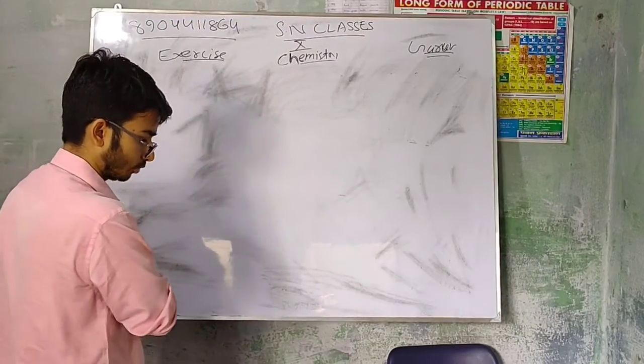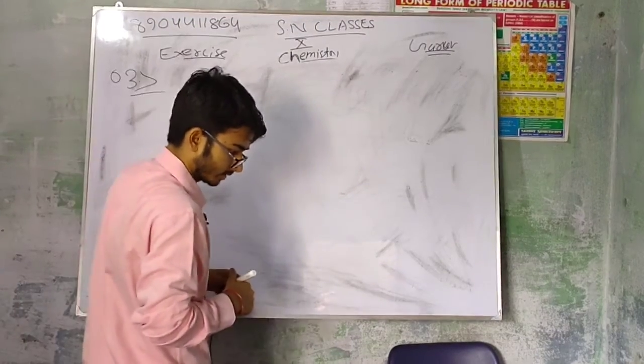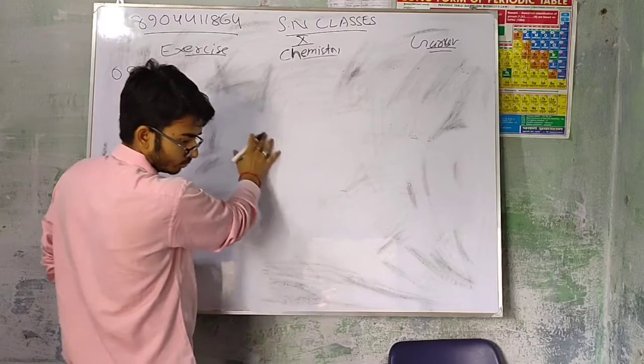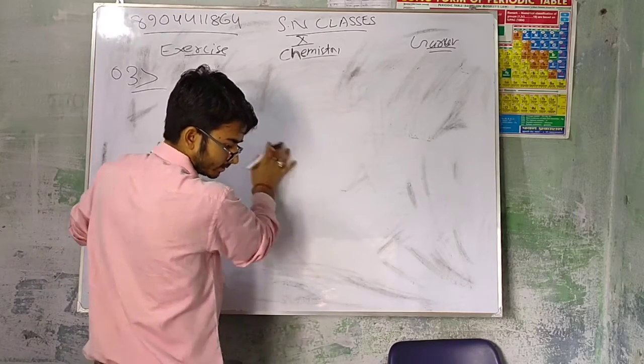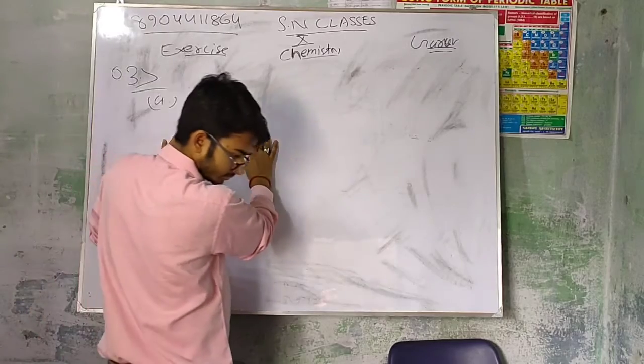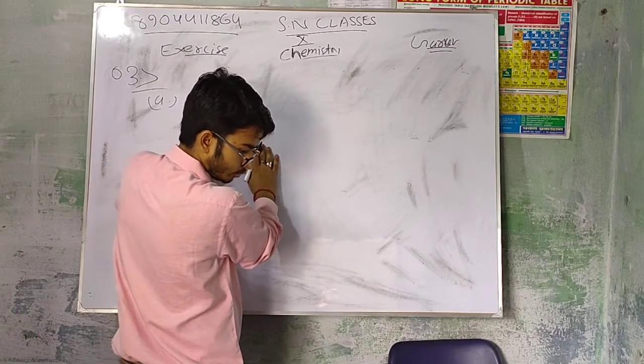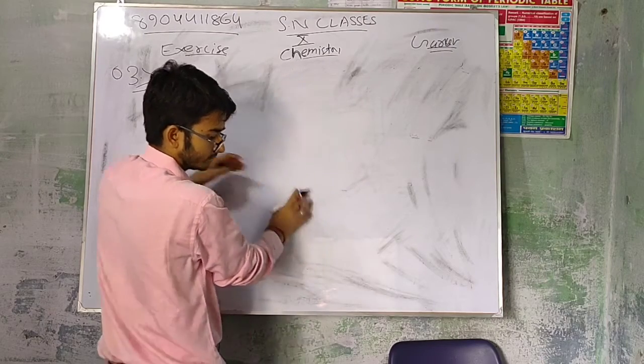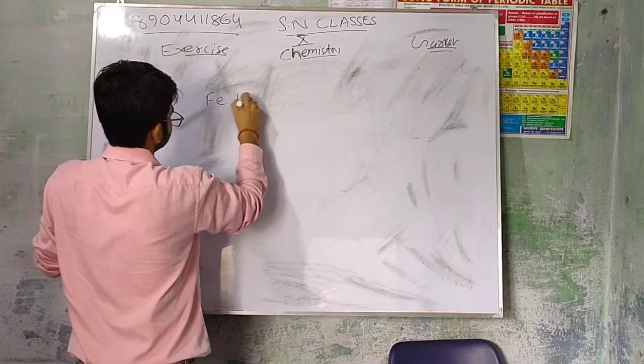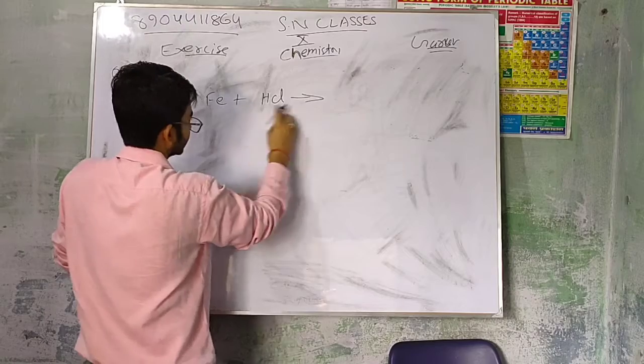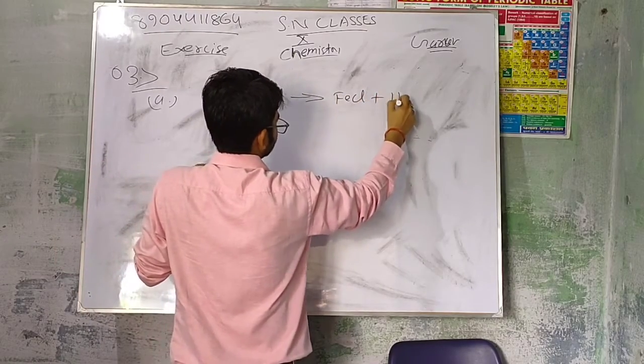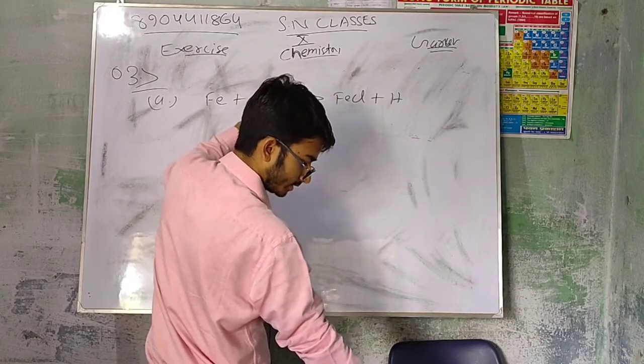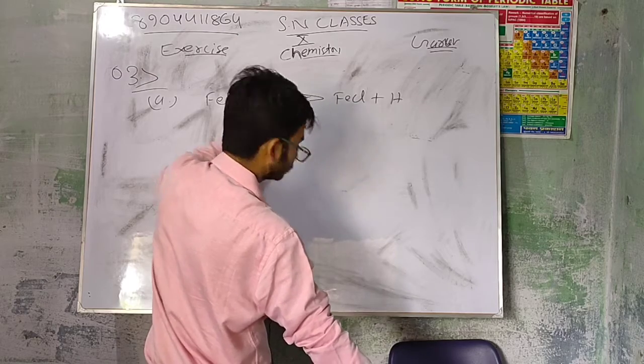Hydrochloric acid is added to iron filings. Pick the correct answer. The first option: HCl, hydrochloric acid is added to iron filings. Hydrogen gas and iron chloride are produced. What happens when dilute hydrochloric acid is added to iron filings? We get FeCl plus hydrogen. What is hydrochloric acid? HCl is called hydrochloric acid.